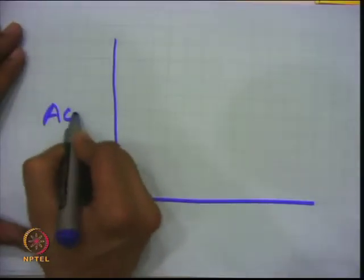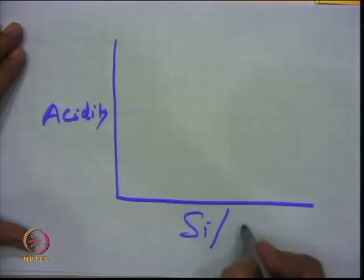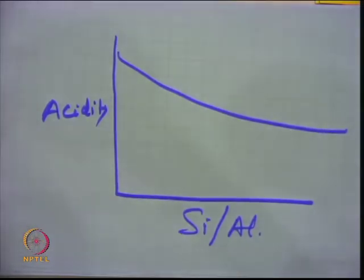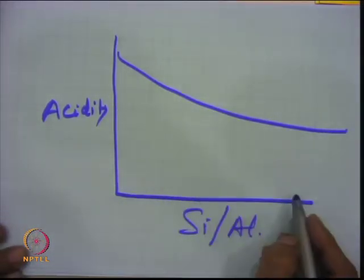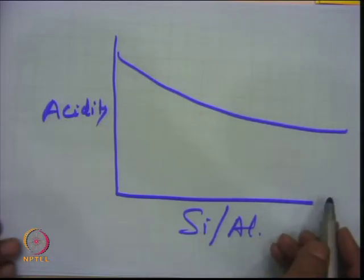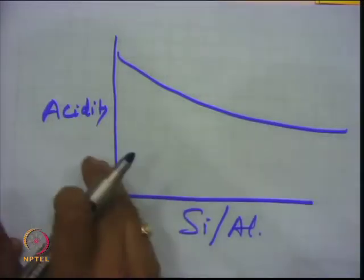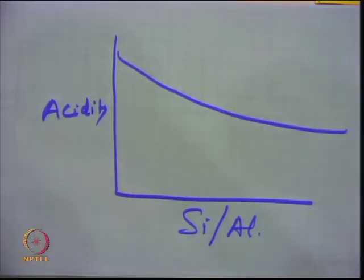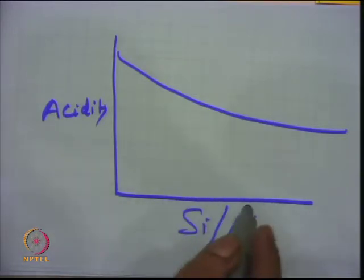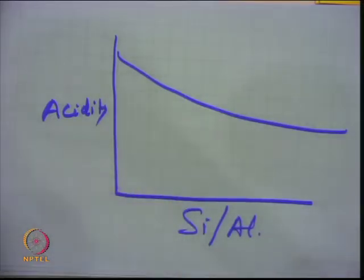If you want higher acidity, there is a graph showing acidity as a function of silicon-to-aluminum ratio. Concentration will go lower with higher Si/Al ratio, while acid strength is the reverse — less silicon means more acid strength. One has to tune the silicon-to-aluminum ratio for acidity concentration, acid strength, and stability of the zeolite simultaneously.